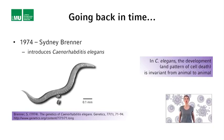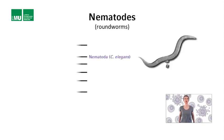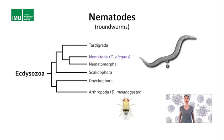But before we go into these genetic studies, let me give you some more background about C. elegans. Nematodes, or roundworms as they are sometimes called, are a phylum that is part of the ecdysozoa, a group of animals that also includes, for example, arthropods. Insects such as the fruit fly Drosophila melanogaster, another important model organism in the life sciences, are arthropods.